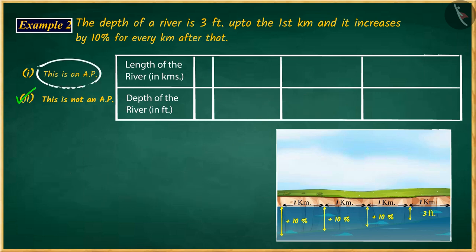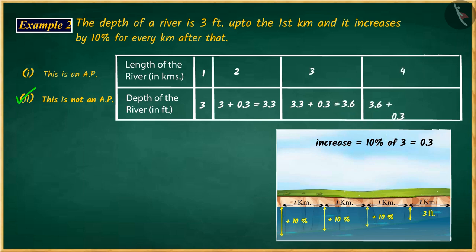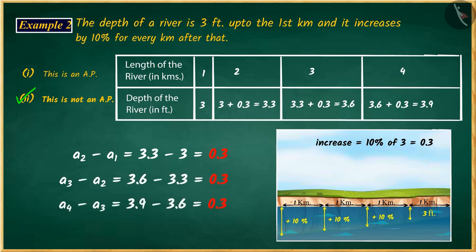If you have chosen the first option, then it's a good try. But, this is an incorrect answer, because you have considered a 10% increase in the depth for every kilometer in the question as a fixed number. You remember that the series you get by adding a certain number to each term except the first term is an arithmetic series. Due to which, you considered 10% as a fixed number and the series obtained according to the situation given in the question as an arithmetic series. And your answer went wrong.